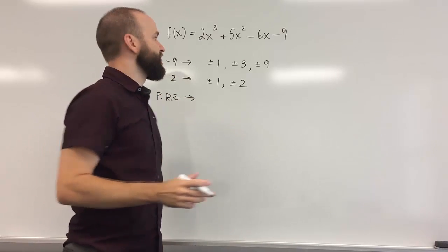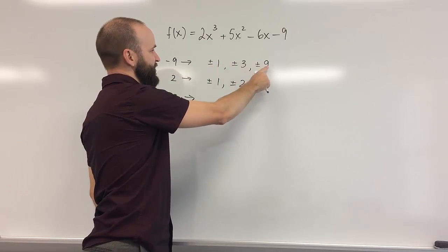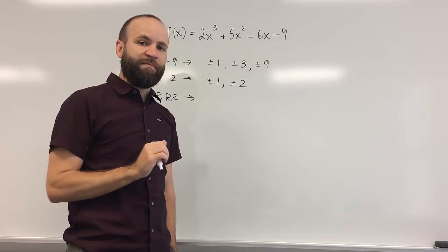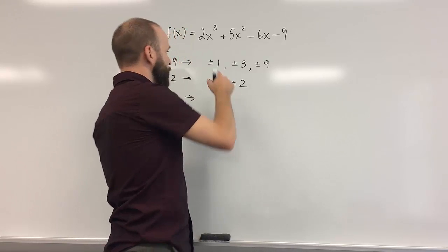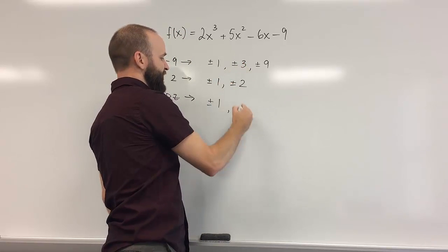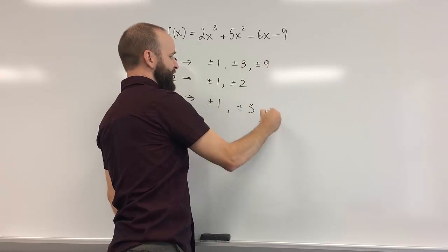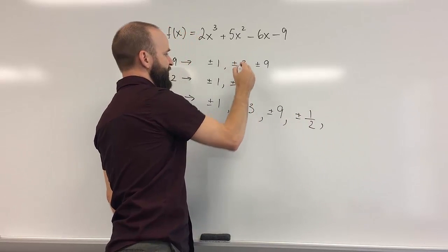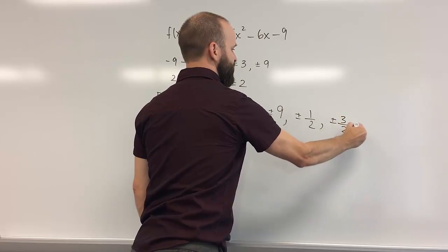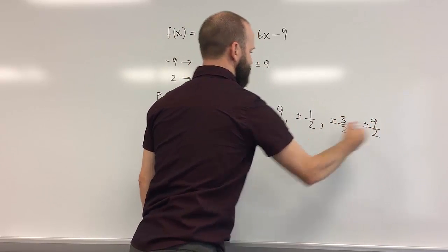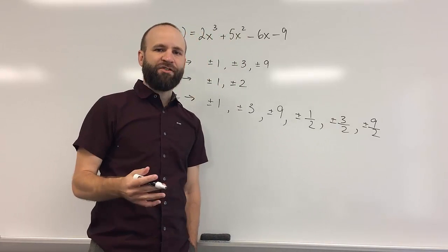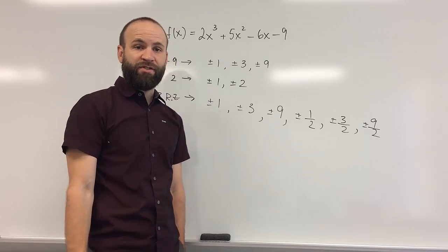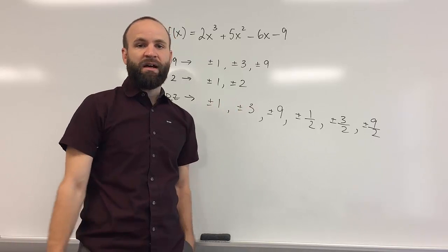The rational zeros theorem tells us we take every factor of the constant term divided by every factor of the leading coefficient, and that gives us a list of possible rational zeros. 1÷1 = 1; 3÷1 = 3; 9÷1 = 9; 1÷2 = 1/2; 3÷2 = 3/2; and 9÷2 = 9/2. So this is our list of possible rational zeros, and we have 12 possible zeros total counting positive and negative for each value.